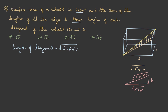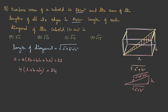From the given data: surface area = 2(LB + BH + HL) = 22, so LB + BH + HL = 11. For the sum of all edges, each of L, B, and H repeats four times, giving 4(L + B + H) = 24, so L + B + H = 6.